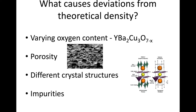Also impurities — if we have some other impurity that's not supposed to be there, that could affect the density relative to what we'd expect for theoretical YBCO. What you're being asked to do in this lab is calculate density, but also think about what is causing the differences. Is it the variable oxygen content? You are calculating oxygen content through titration, which we'll talk about in a moment. Is it porosity? Is it different crystal structures? We are going to do X-ray diffraction, which will give us information about crystal structures. Is it impurities, which we could also see from XRD.